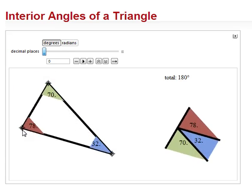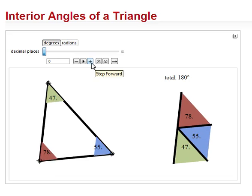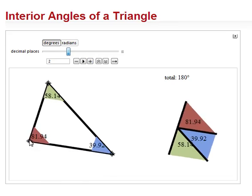And we can do anything we want to it and the number of degrees in this triangle stays 180. We can give it more decimal points and it will still remain the same.